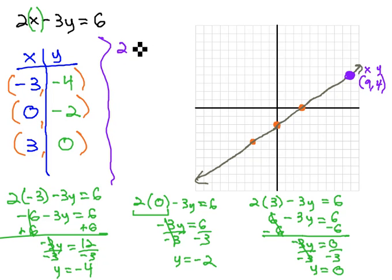Let's check it. 2x, or 2 times 9, minus 3y, or 3 times 4, should equal 6. 2 times 9 is 18, minus 3 times 4 is 12, and sure enough, we get 6 equals 6. Any point we pick on this line when plugged in for x and y will give us a true equation.